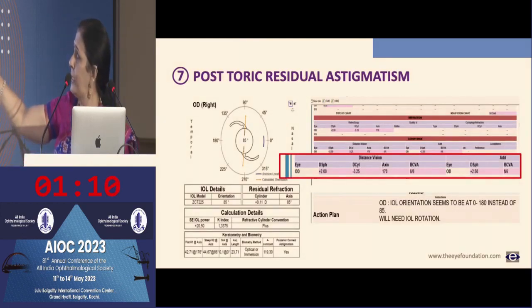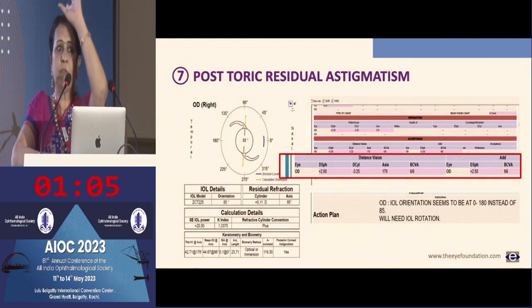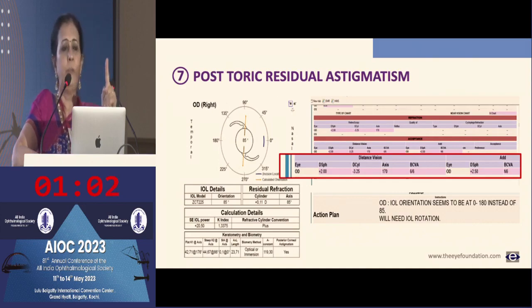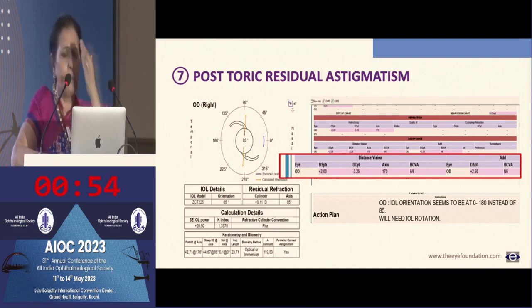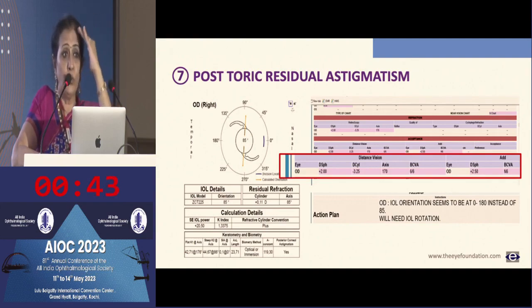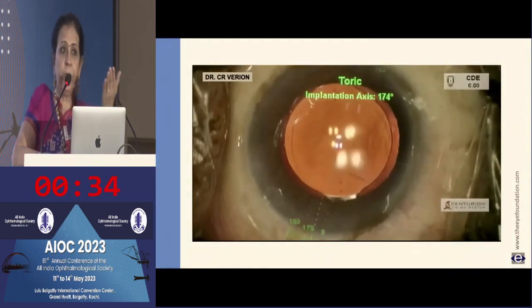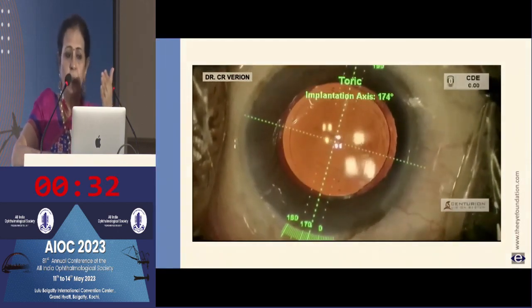Looking at a particular case — the sphere and cylinder show the spherical equivalent is nearly zero, which tells you this patient will benefit from toric IOL rotation. Tools like astigmaticfix.com or the Barrett treatment formula will tell you when to rotate the lens, when to do bioptics or laser touch-up, when to place a piggyback lens, and when to do an IOL exchange. In this particular patient, we just did a repositioning of the toric IOL.